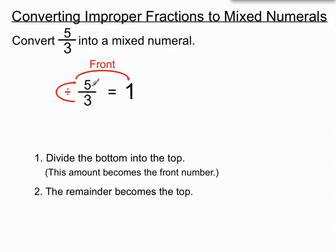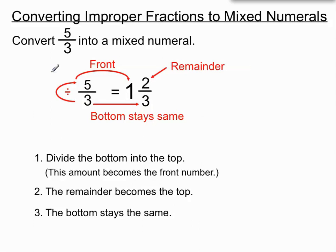So our remainder was, can you remember, 3 goes into 5 once with 2 remainder. So that becomes the top of our fraction section there. The remainder goes up the top there. And this last bit's thankfully pretty straightforward. The bottom stays the same. So our original bottom in our fraction was 3, and it just slides across to become the bottom of the newly formed mixed numeral there.